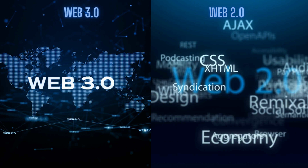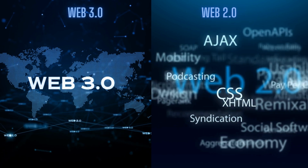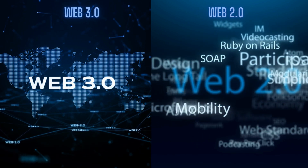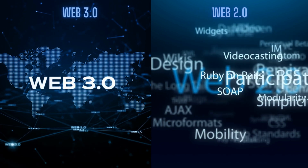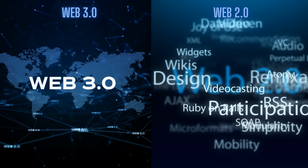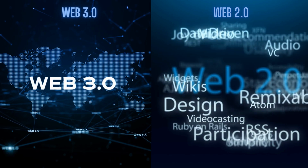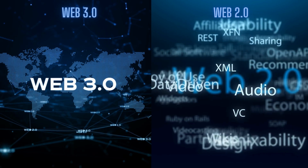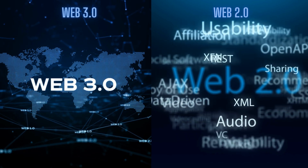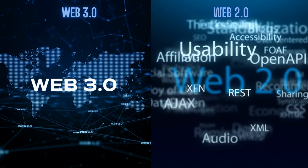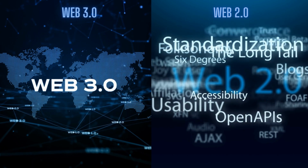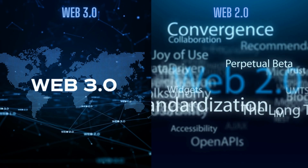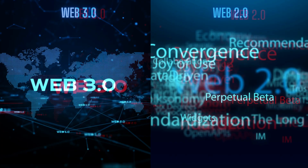Web 2.0 and Web 3.0 are both crucial stages in the evolution of the internet. Web 2.0 focuses on user-generated content and collaboration, while Web 3.0 is all about creating a more intelligent, decentralized, and trustful web.